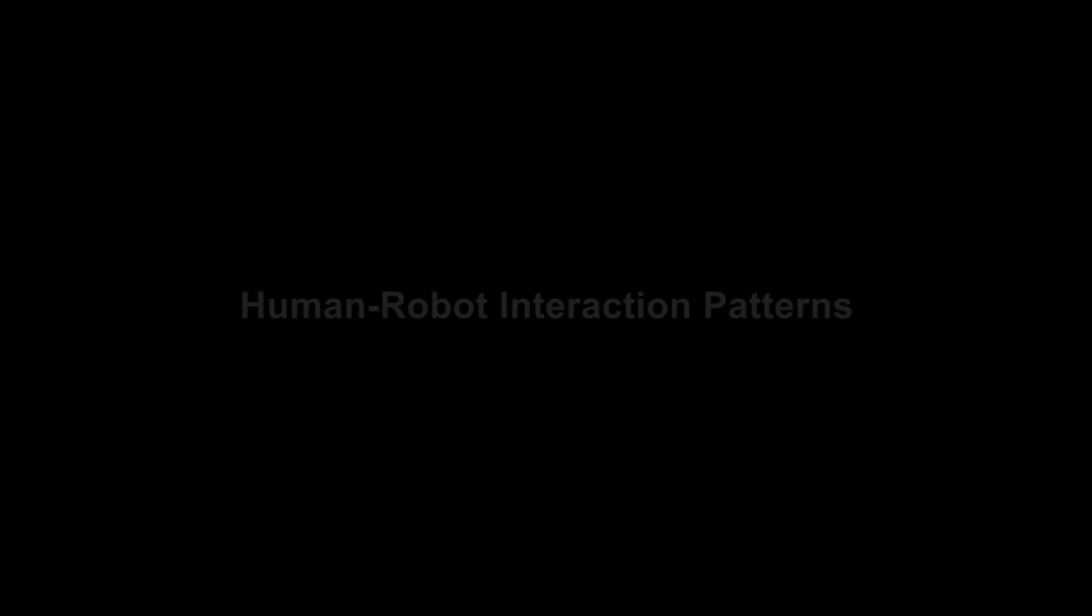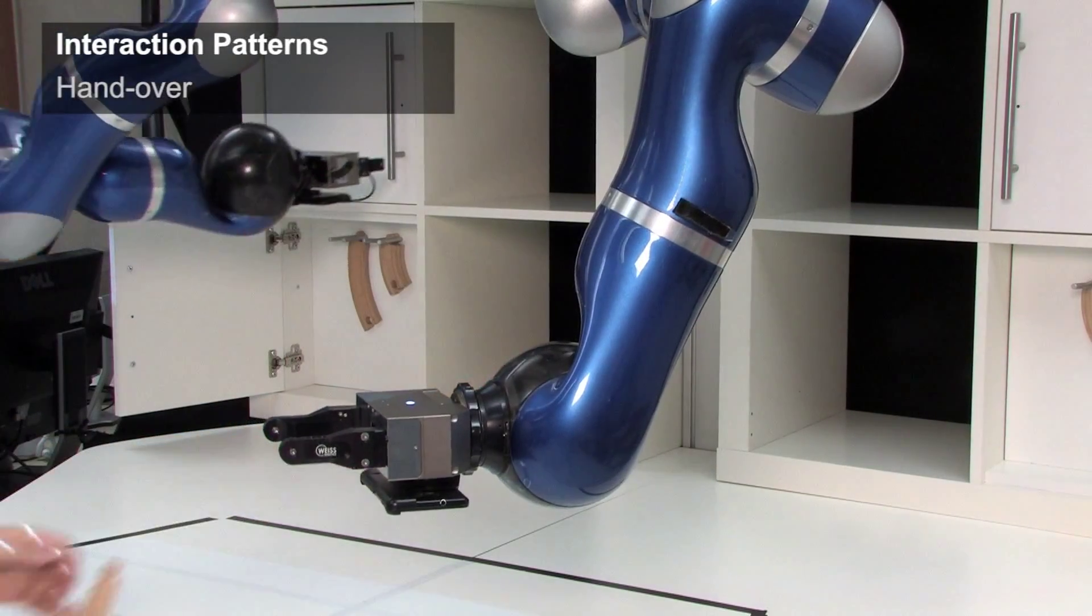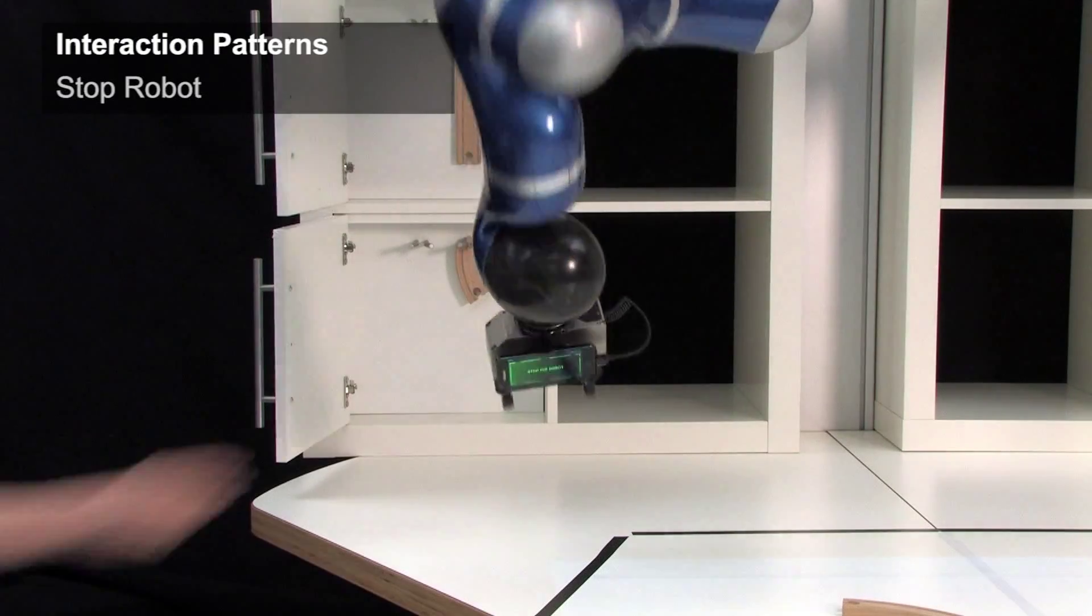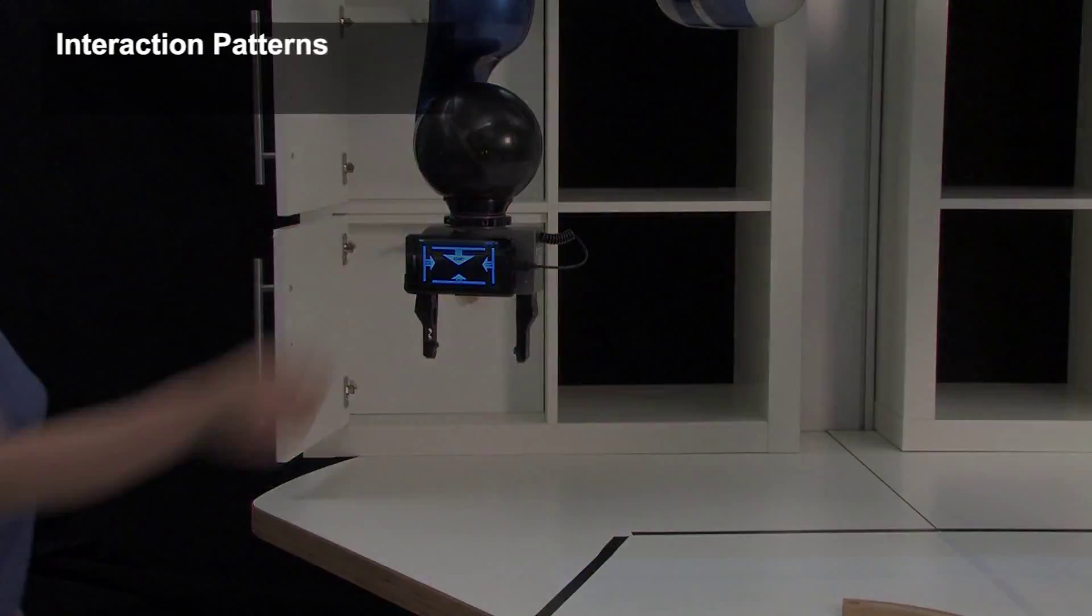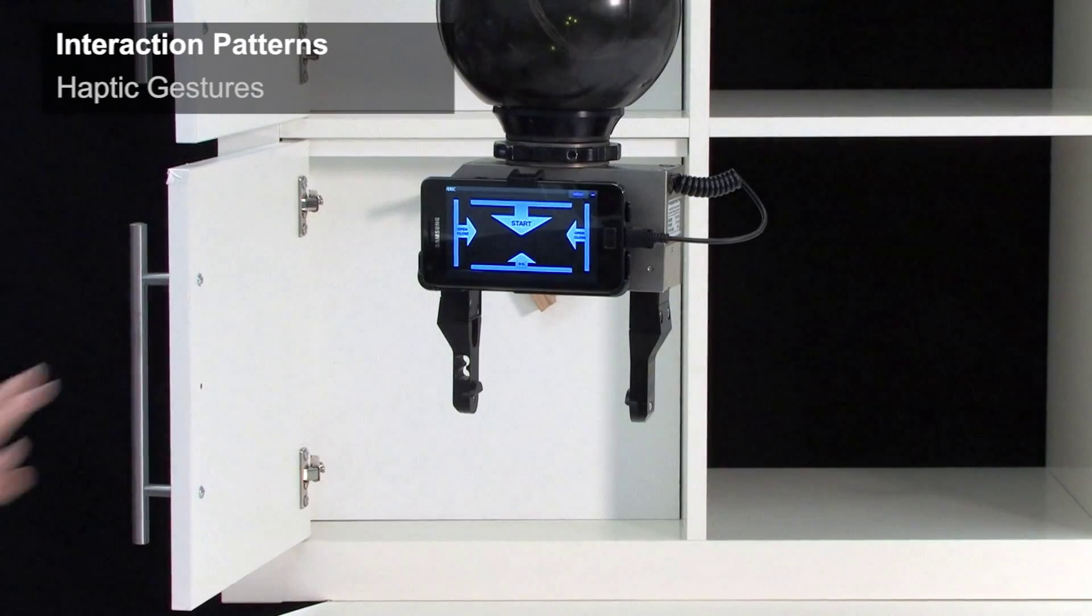The robots are capable of distinguishing contact intensity. Gentle contacts are interpreted as the human's intent to interact. This makes the robot pause and wait for further input.